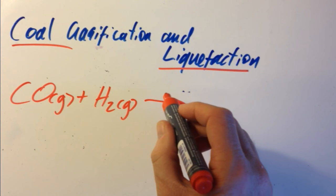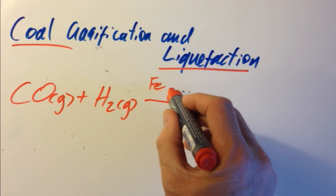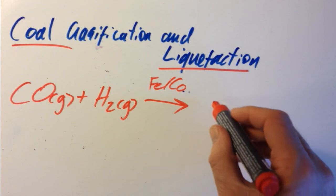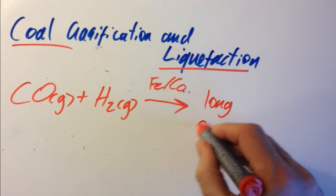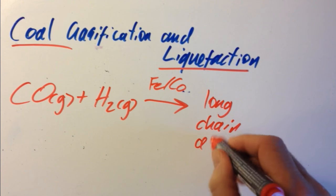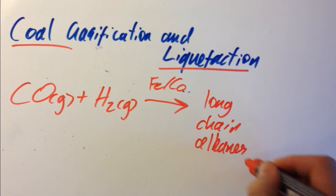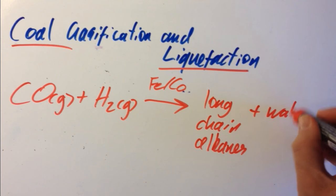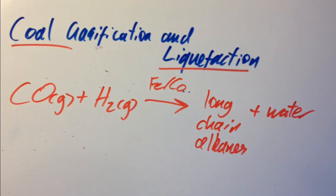If you run it over an iron or cobalt catalyst, you're going to get long-chain alkanes, which are going to be liquid, and a bit of water as well. And we're liquefied, and we're done.